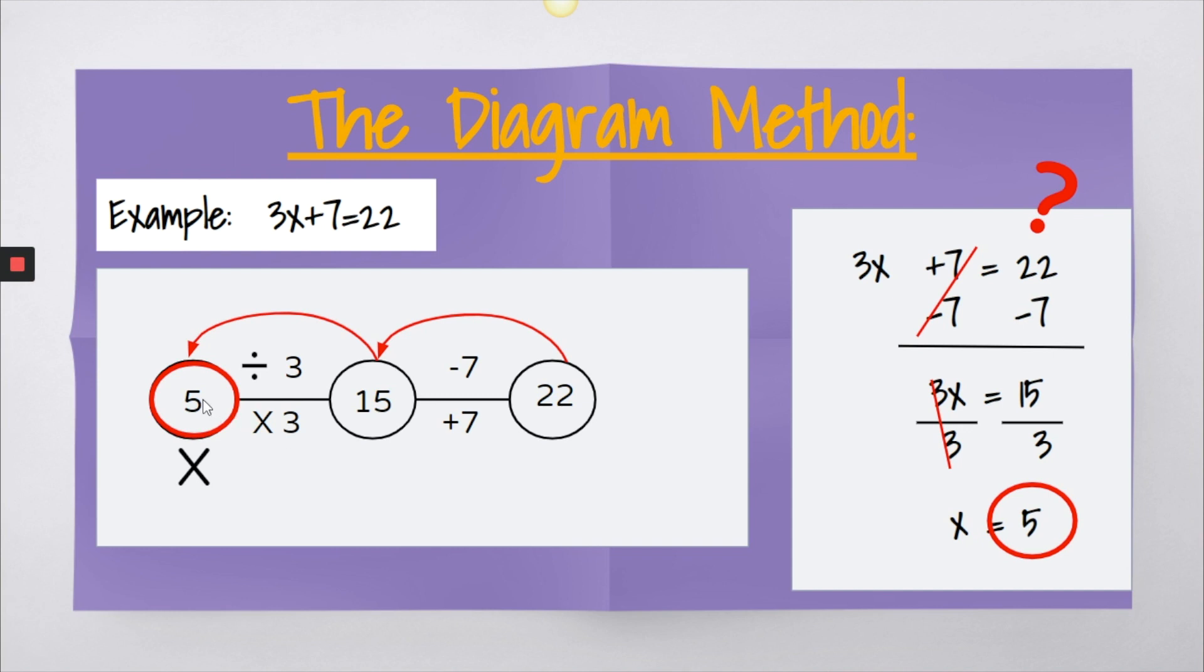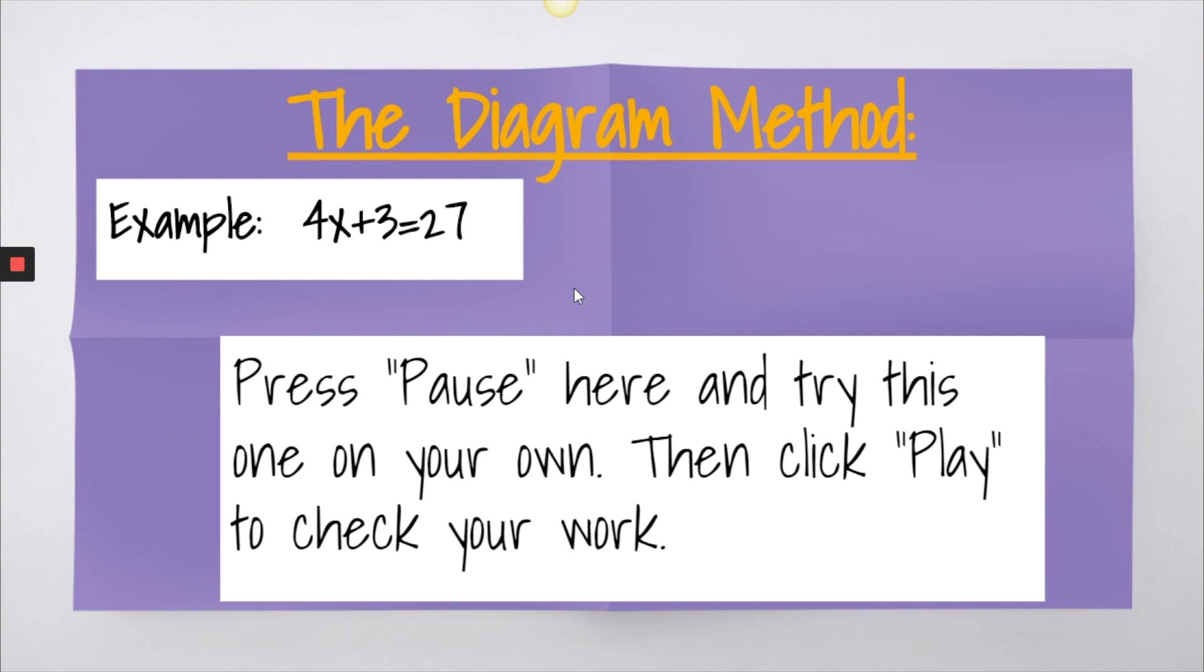The one thing I want to also point out about this diagram method is that this is great for checking their work. They can take what they found x as. They can multiply that by 3. That's going to give them 15. And then they add 7. That gives them 22. And so this method is good not only for connecting it to the algebraic model, but also for checking.